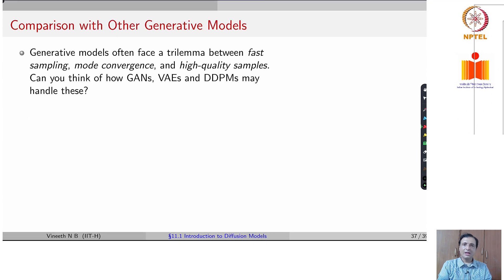In general, if we had to compare DDPMs and diffusion with other generative models, one evaluates these on three factors. You want your sampling to be fast, the generation to be fast. You want mode convergence, you want to ensure that you converge and represent different modes. And you also want high quality generation.